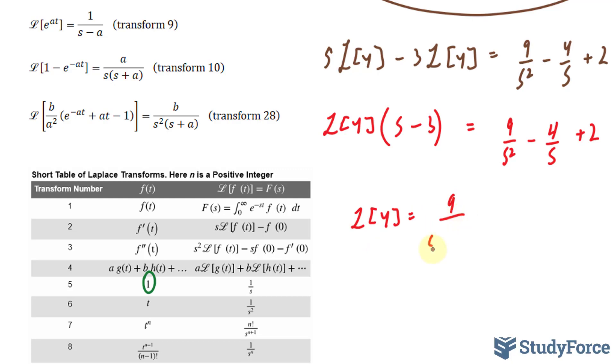This finally gives me what step number 2 asks of us, which is 9/(s²(s − 3)) − 4/(s(s − 3)) + 2/(s − 3).